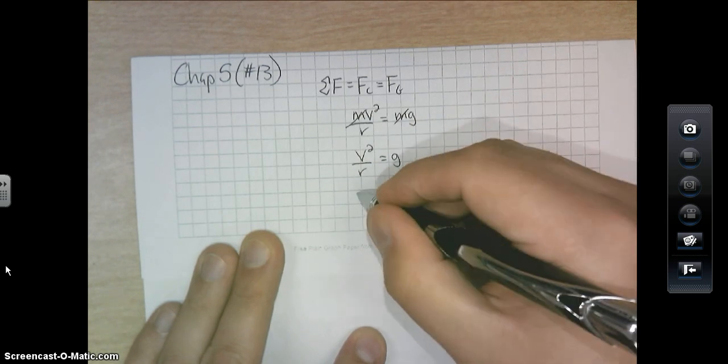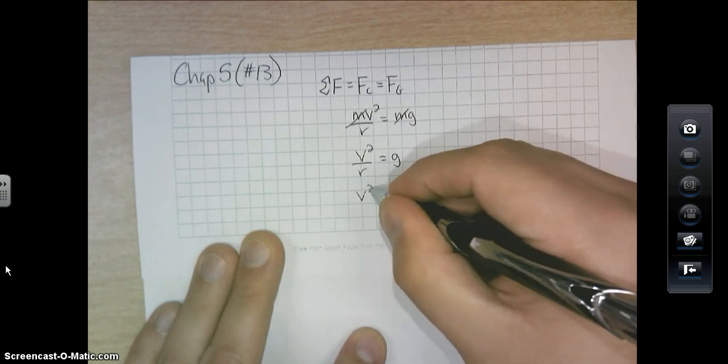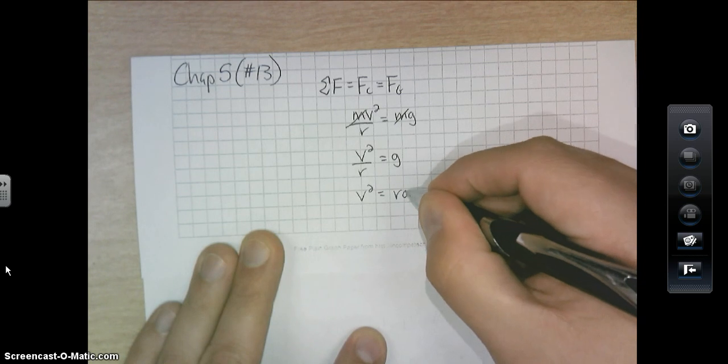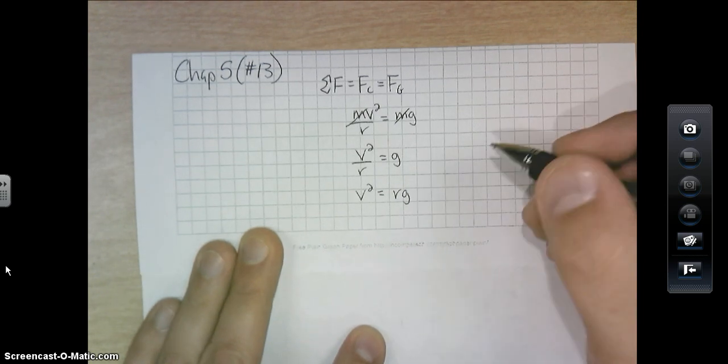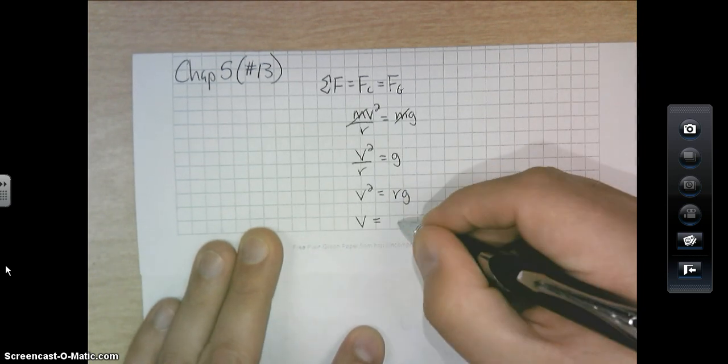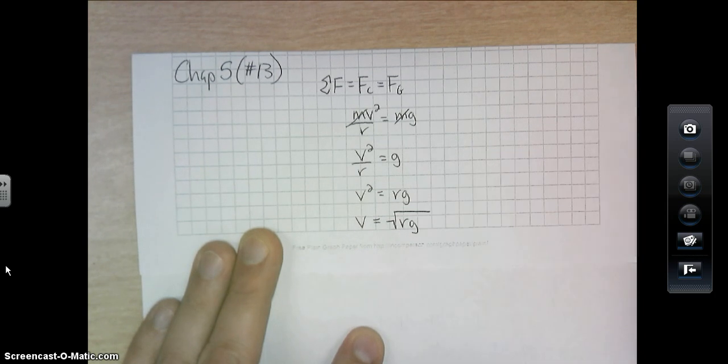And if I want to get v by itself, I'll have v squared is equal to rg, and then if I really want v all by itself, it would be v equal to the square root of rg.